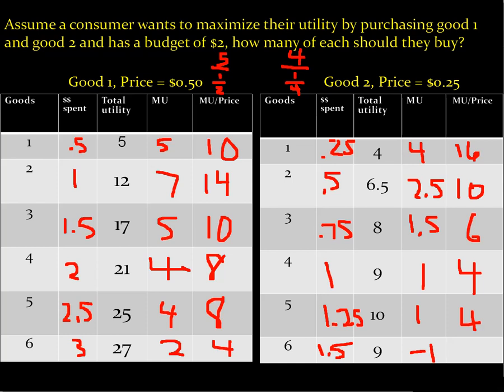Our budget is $2. Looking for matching MU/price values we can afford: 10 and 10 might work. Spending $1.50 on good one and $0.50 on good two satisfies the $2 budget. The answer is to buy three units of good one and two units of good two.